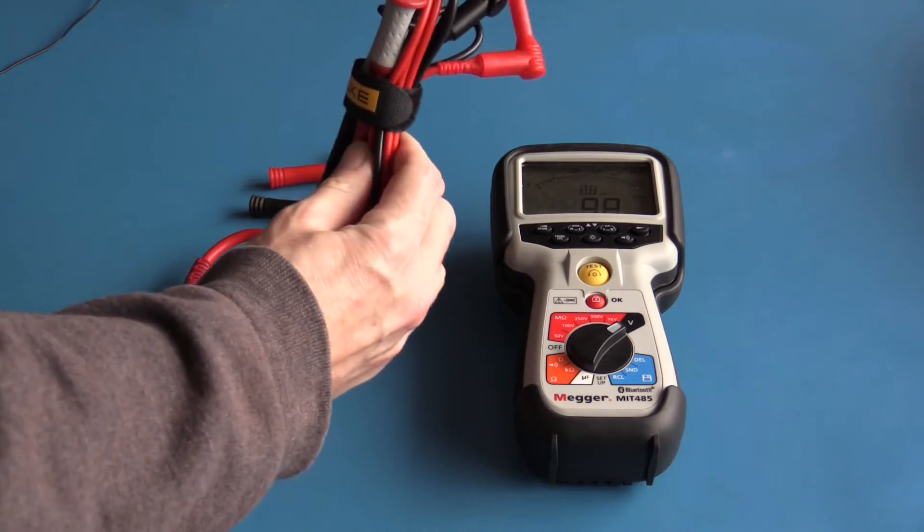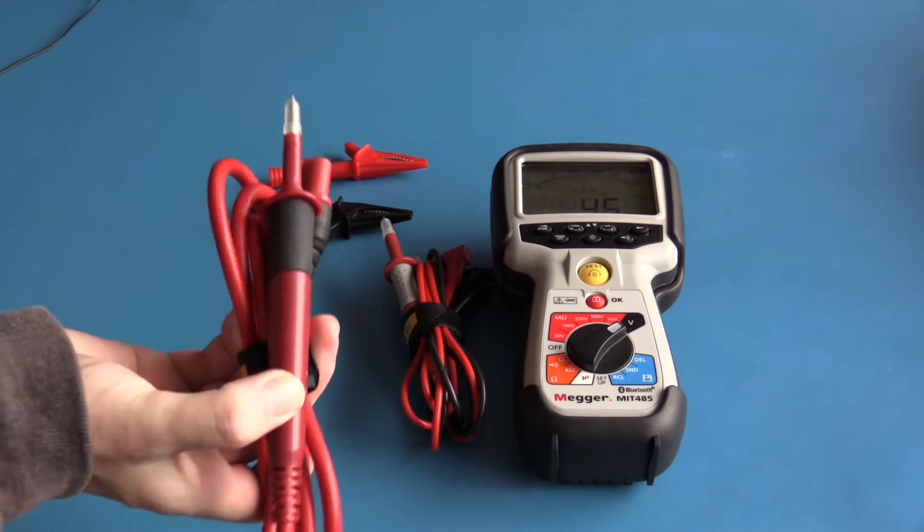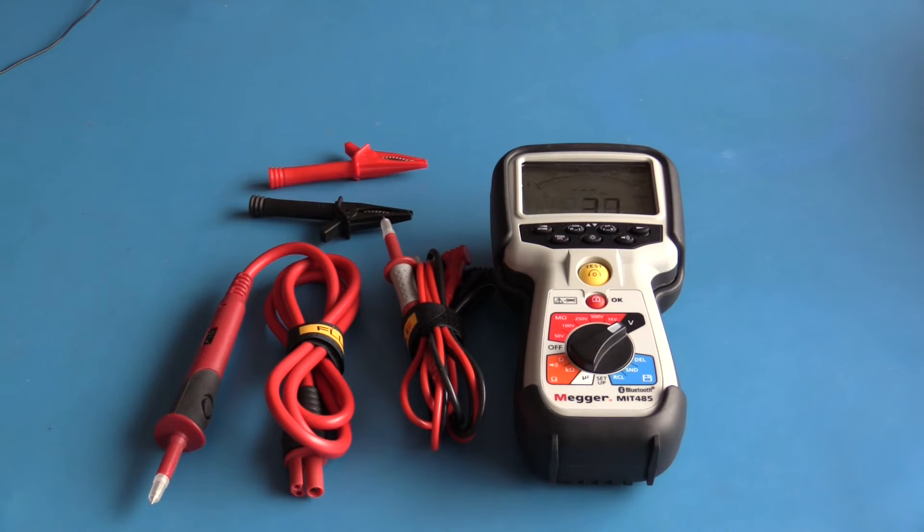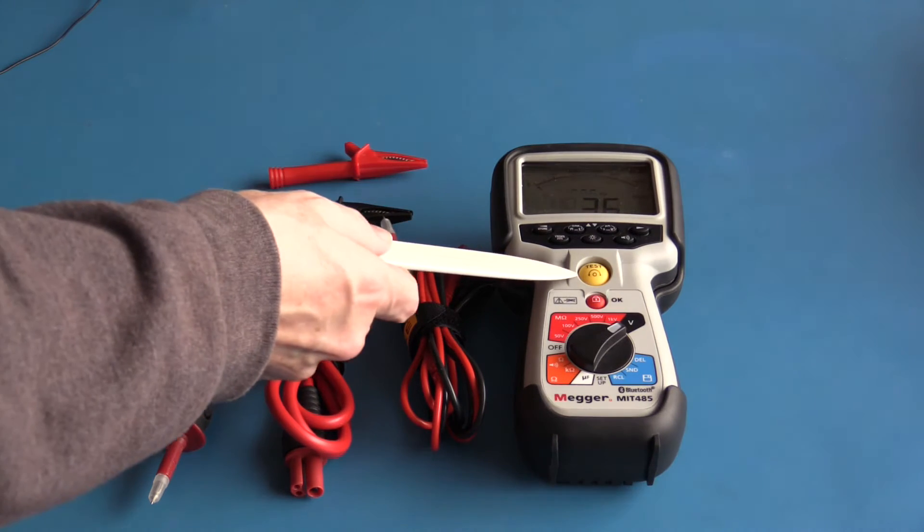The meter came with a set of test leads as well as a remote probe. The remote probe allows you to take a measurement when you can't physically reach the meter and press the test button on the meter.